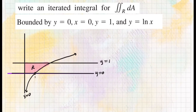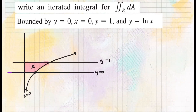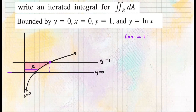We have to decide which method is convenient — type 1 or type 2. If you try to set up type 1, you'd have to split it into two separate double integrals, which is not convenient. Instead, if you draw a horizontal line through the region, you'll have a right curve and a left curve, and y ranges from zero up to that intersection point. When ln of x equals one, x equals e — so the intersection is at x equals e.